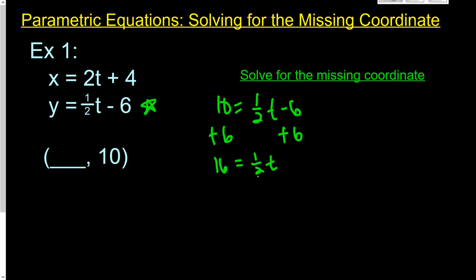And then I'm going to cancel out the multiplying by half, so I'm going to multiply by 2 to cancel that out. And 16 times 2 is 32. So at time t equals 32, the y value is 10.